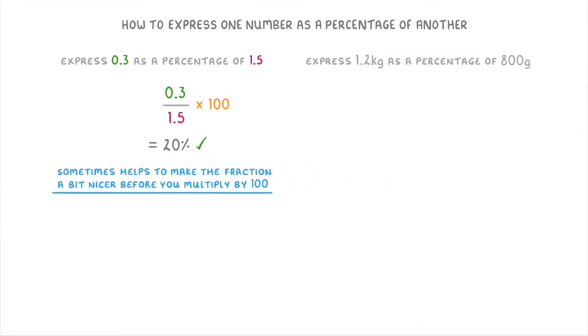If you don't have a calculator when you're doing these types of questions, it sometimes helps to make the fractions a bit nicer before you multiply them by 100. For example, with 0.3 over 1.5, we could multiply the top and bottom by 10 to get rid of the decimals, which would give us 3 over 15, and then divide top and bottom by 3 to get 1 over 5, which is much easier to multiply by 100, because it becomes 100 over 5, which is 20.